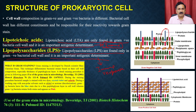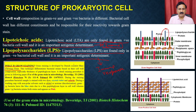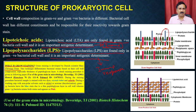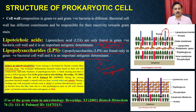Gram staining is a staining technique developed by Danish scientist Hans Christian Gram. Gram-positive bacteria take up the gram stain whereas gram-negative bacteria do not. If you want to read more about gram staining, you can go through the publication and the small write-up that has been provided.